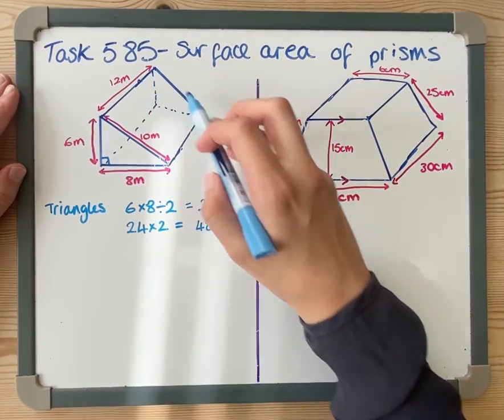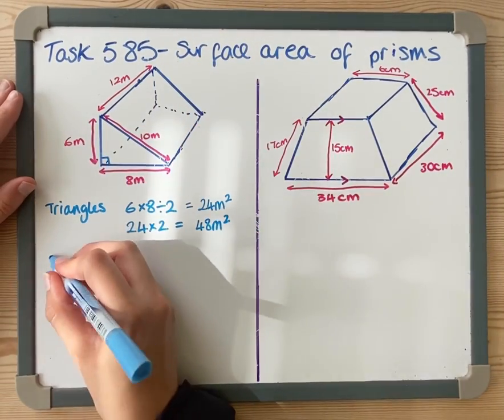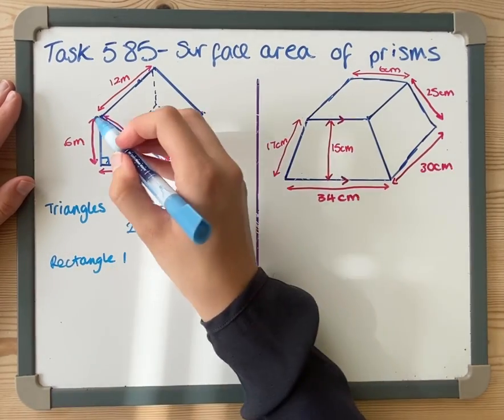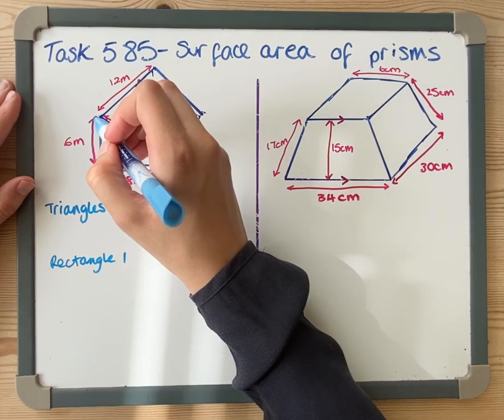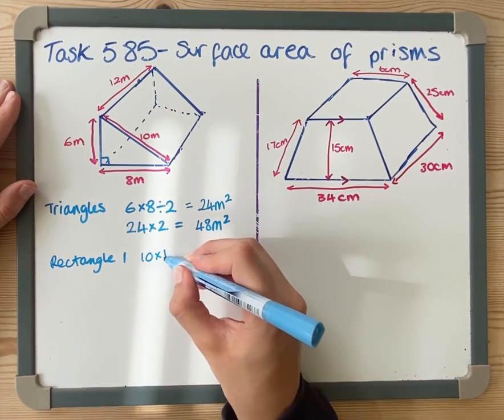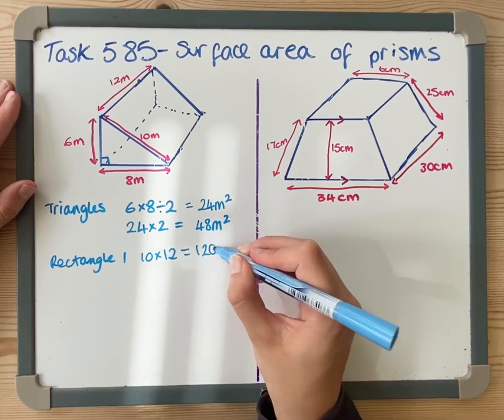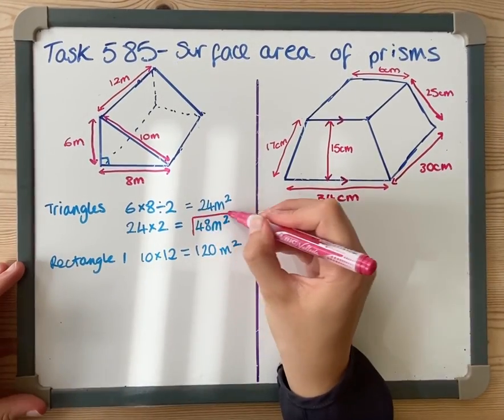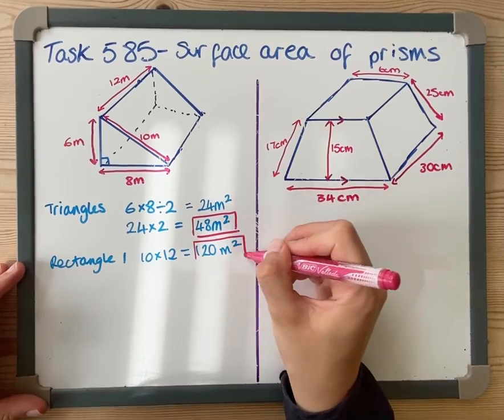I'm going to start with this big rectangle up there. There are three rectangles. Rectangle one is this one here which is 10 by 12 which is 120 meters squared. I'm just going to make sure I put in boxes the bits that are important.